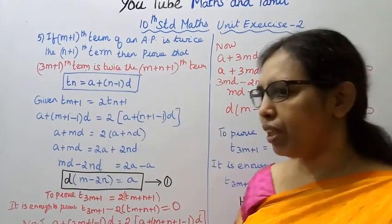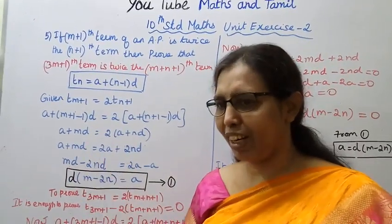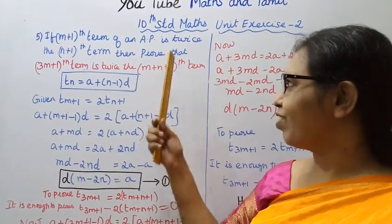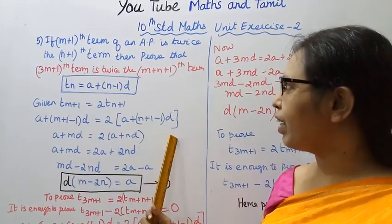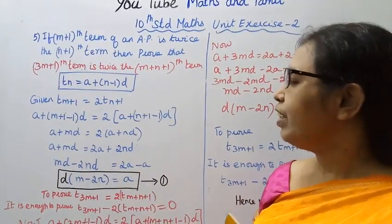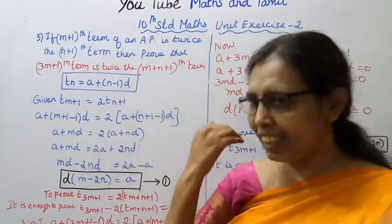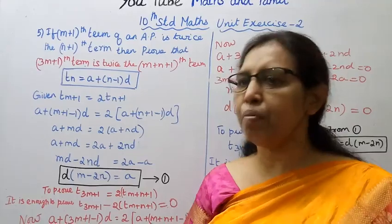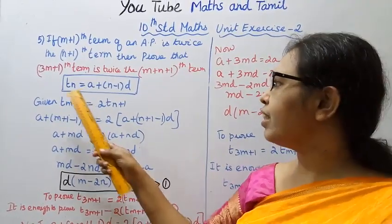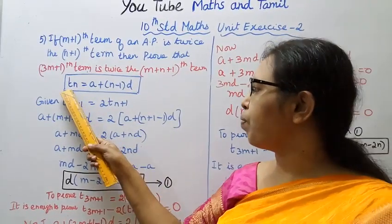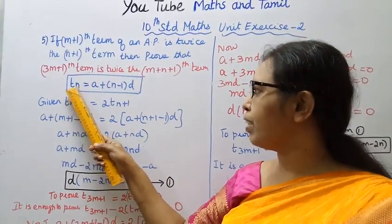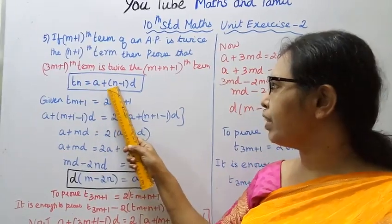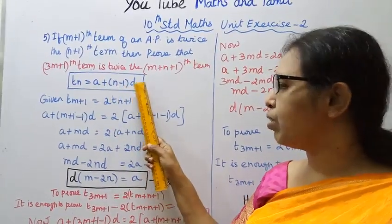Let me give a good explanation. The nth term of an AP — the nth term formula is: T(N) equal to A plus N minus 1 into D.